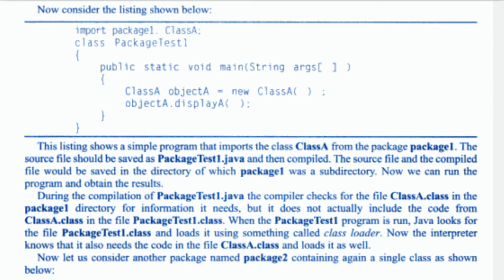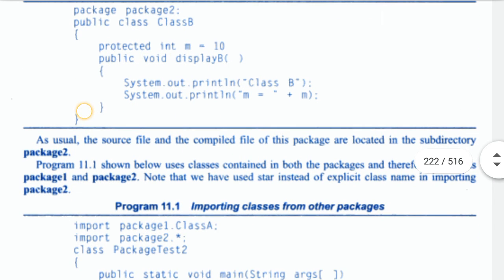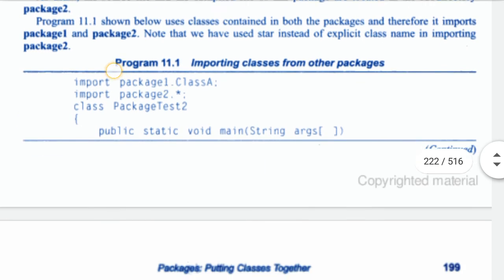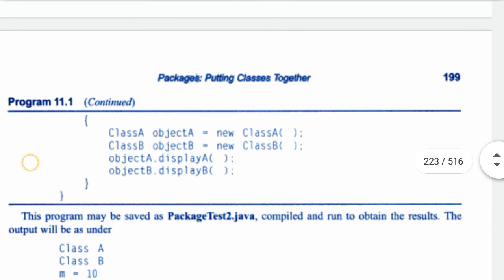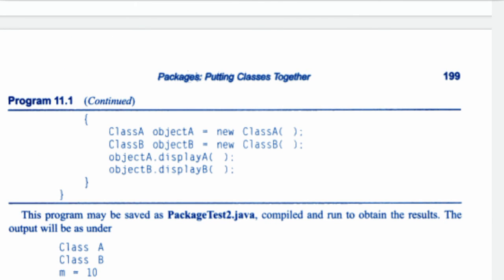The interpreter knows that it also needs the code in the file ClassA.class and loads it as well. Now let us consider another package named package two, containing a single class. As usual, the source file and compiled file of this package are located in the subdirectory package two. The program shown below uses classes contained in both packages, and therefore imports package one and package two. Note that we have used a star instead of an explicit class name when importing package two.